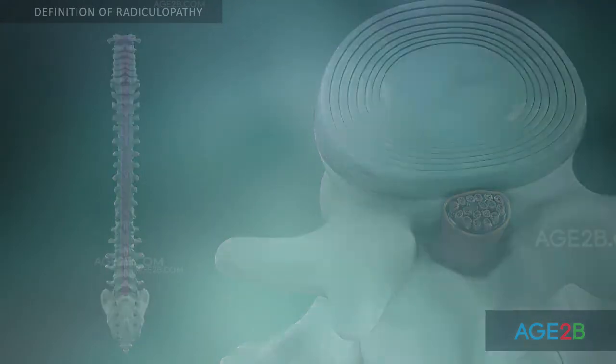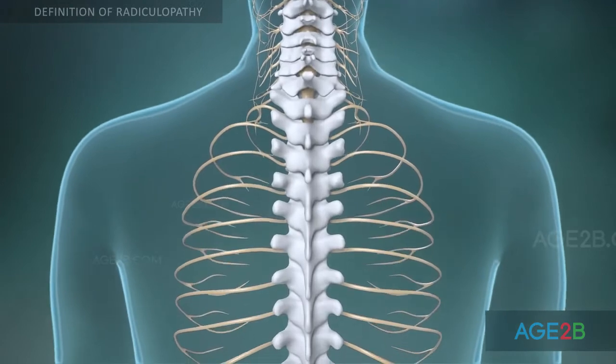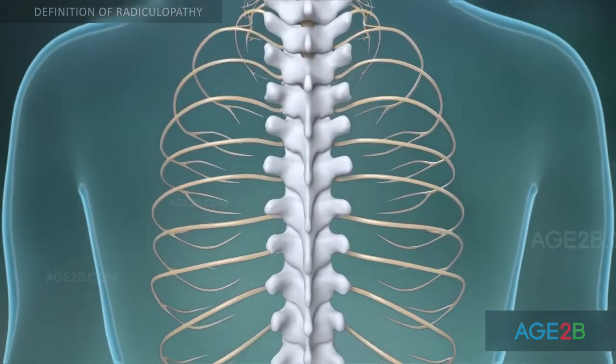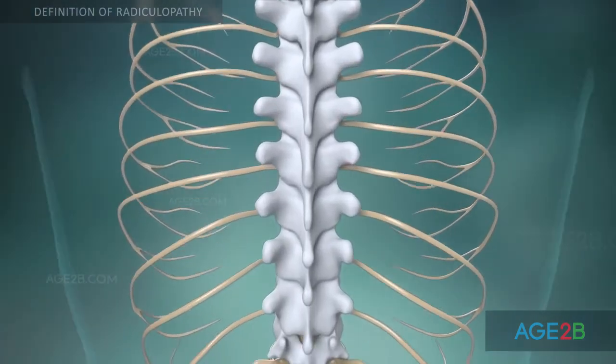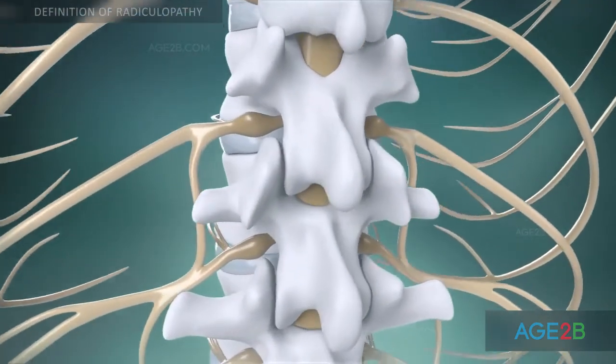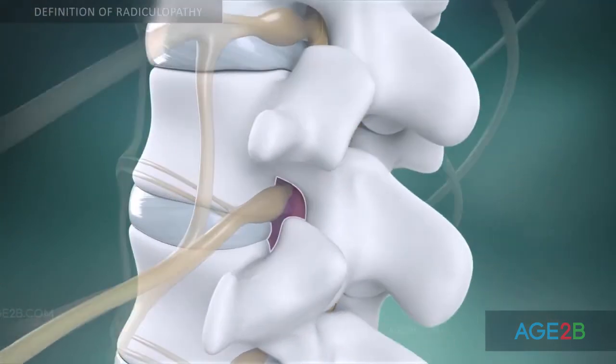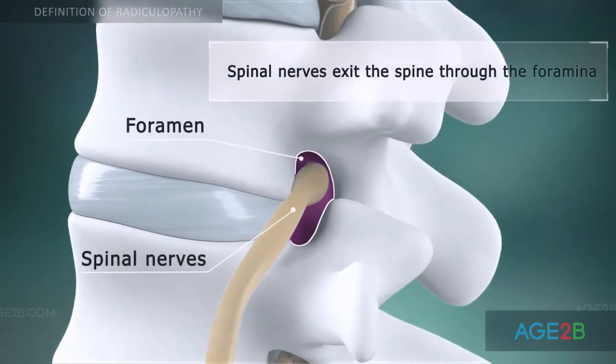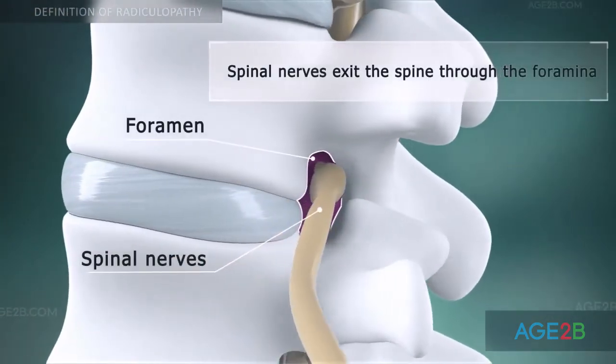The spinal nerves branch off the spinal cord in pairs and travel through small openings between the vertebrae called intervertebral foramina.